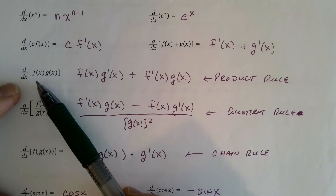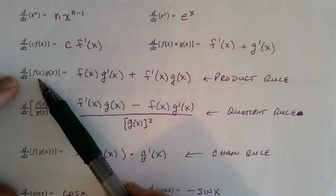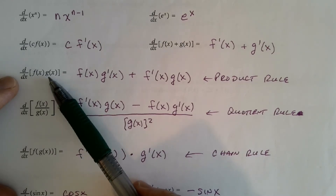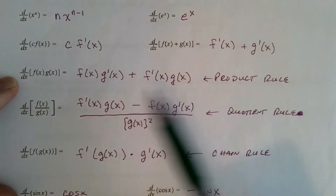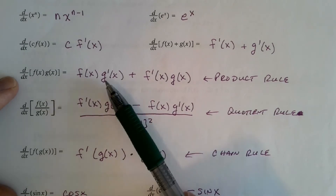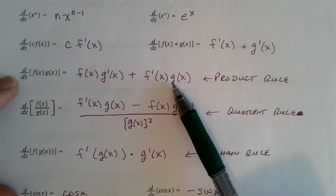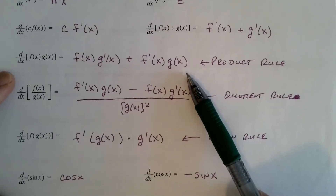It is not true for products. We can't take the derivative of a product and say take the derivative of f and multiply it times the derivative of g. Remember the product rule: it's the function f times the derivative of g, plus the derivative of f times the function g. You've got to remember that product rule — very important.